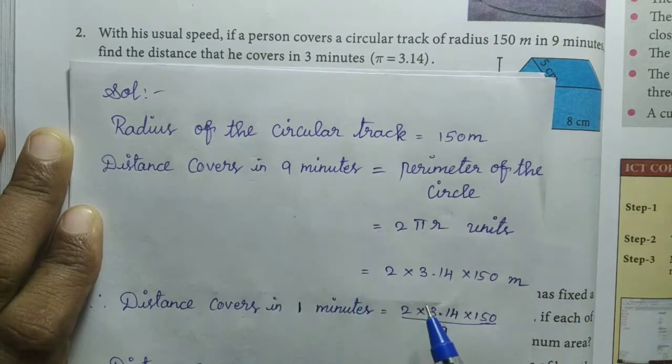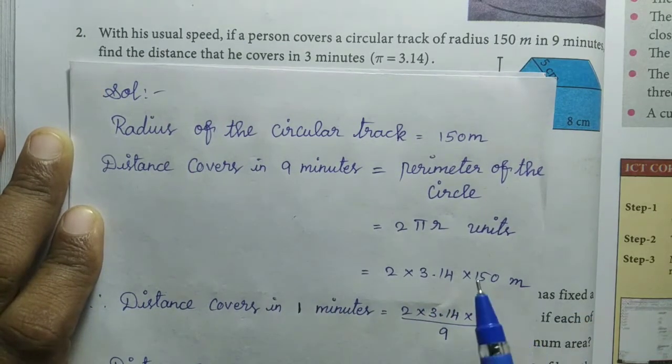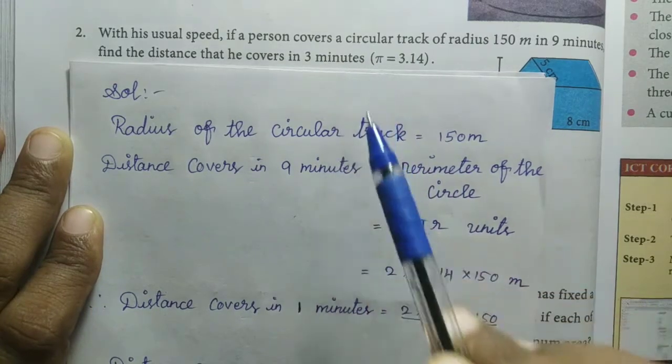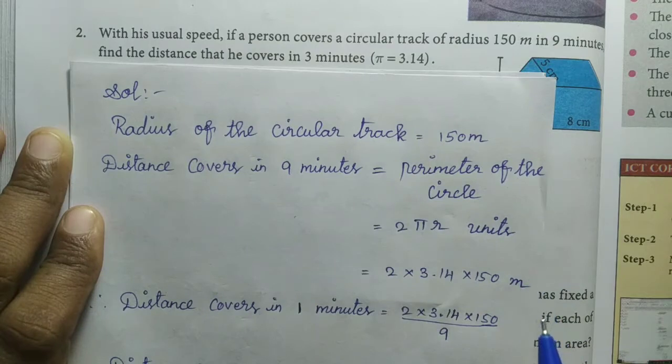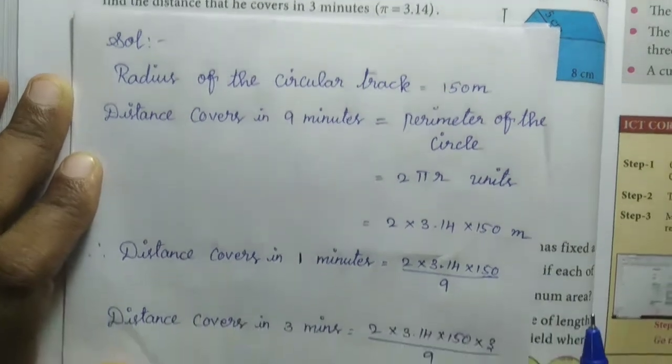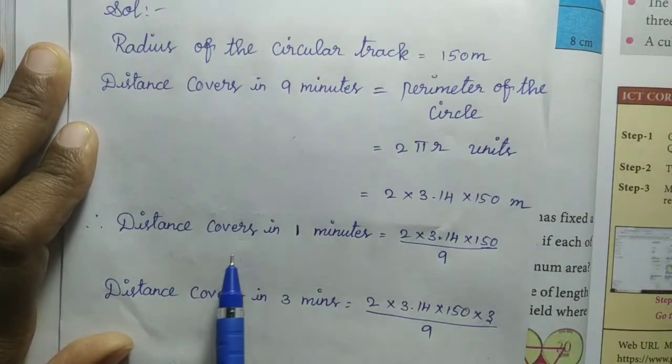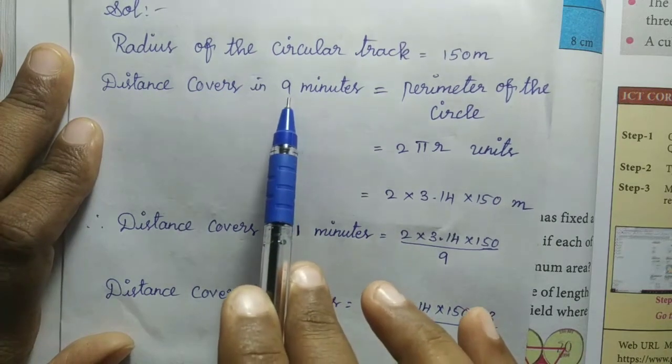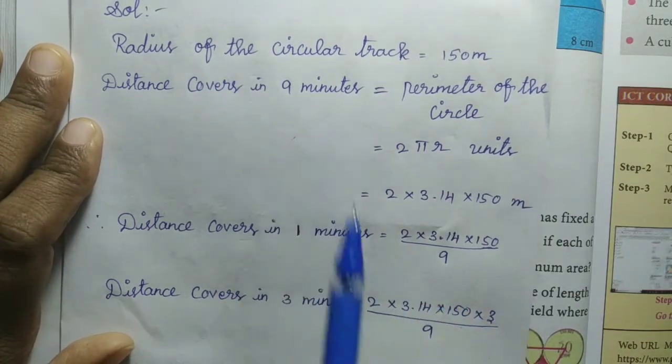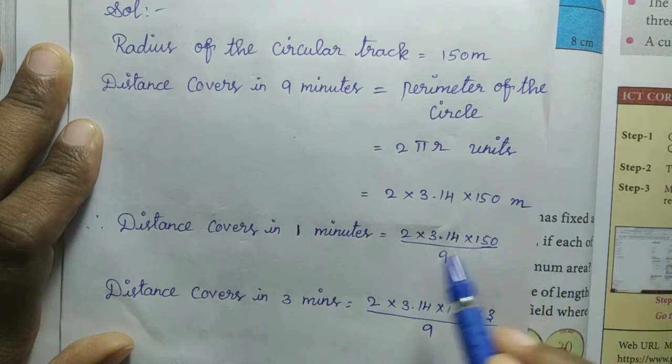We need to find the distance in 3 minutes. First, let's convert to 1 minute - that will be easy. Distance covered in 1 minute equals the total distance divided by 9. So that's 2 × 3.14 × 150 divided by 9.